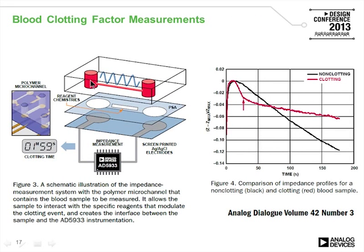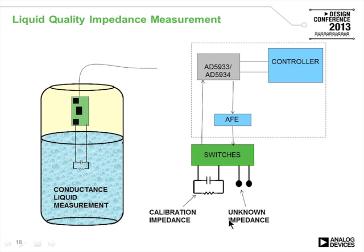A blood sample is smeared on a slide and impedance is measured as a function of time. For healthy blood, impedance rises and then levels off as clotting occurs. For blood that does not clot properly, impedance continues to change—shown as the black curve. This was documented in an Analog Dialogue article. For liquid conductance or impedance measurements, probes are immersed in the liquid to measure both resistance and capacitive effects from metallic content. CMOS switches can select between calibration and unknown impedance.